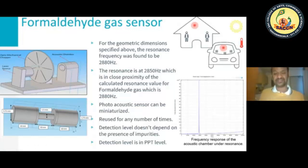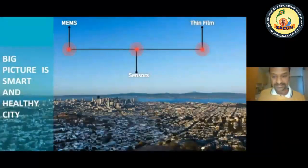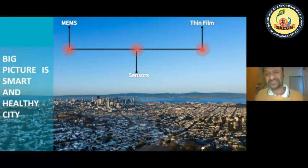Unfortunately, the cost of fabrication was too much, so we were restricted to simulation results only — we didn't proceed to fabrication due to cost constraints. Still, this sensor could be miniaturized, reused many times, has no limit for detection, no issue with impurities, and detection level could be at PPT level. It could be used in smart cities and healthy cities with incorporation of MEMS sensors and thin film technology.